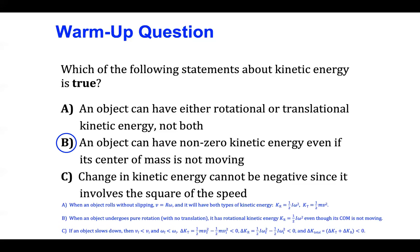Statement C is false because if an object slows down, then its final translational speed VF is less than its initial translational speed VI, and its final angular speed omega F is less than its initial angular speed omega I. So both of those changes in both translational and rotational kinetic energy will be negative, and the total kinetic energy change can be negative since an object is slowing down.